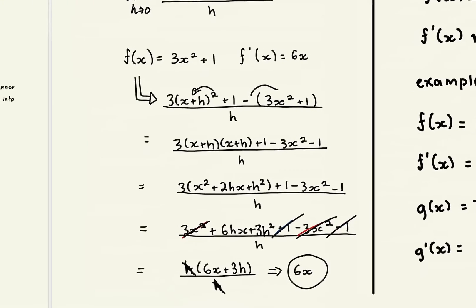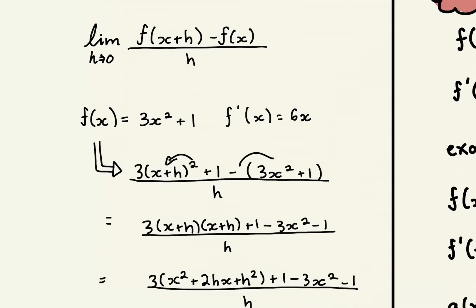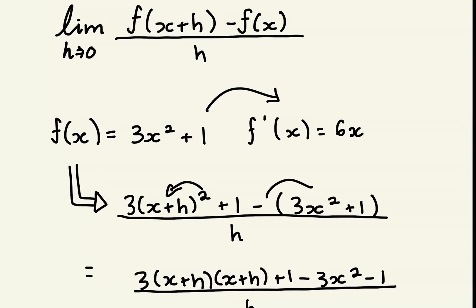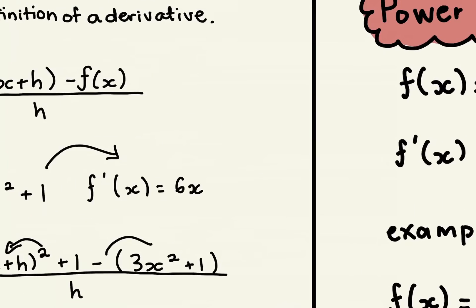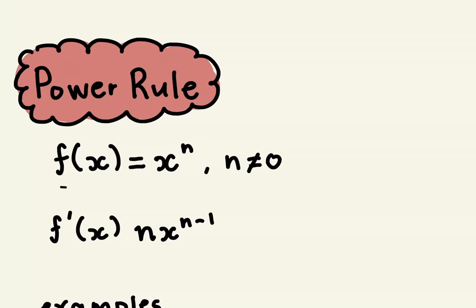Now that was kind of a lengthy process that we had to go through just to get to the derivative of f(x). The power rule actually allows you to do this in really a matter of seconds. The power rule basically says that you have any given function f(x) = x^n, as long as provided the exponent is not equal to zero.